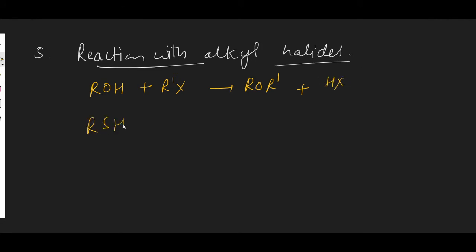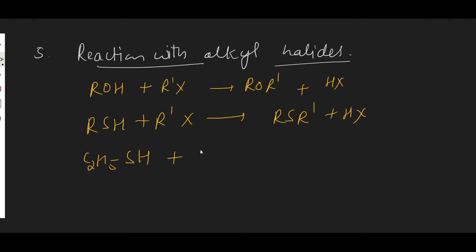When we react thiols with alkyl halides, the product formed is a thioether. For example, ethyl methyl thioether is formed here. Similarly, reacting with other alkyl halides leads to the formation of corresponding thioethers.